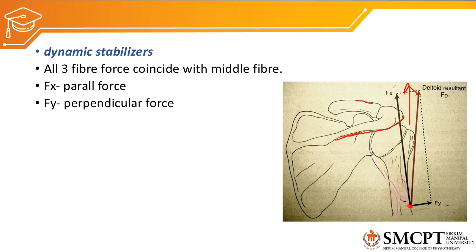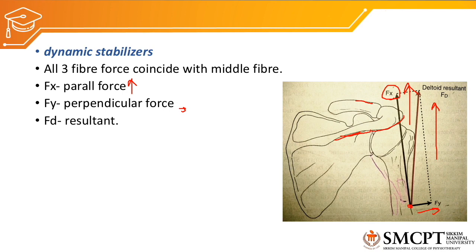Whereas there is a small rotatory force created by the deltoid, which is Fy. So when the deltoid contracts, it creates more of a translatory or parallel force directed upward. As you can see, Fx is translating the humerus upward. So there cannot be pure abduction without help of other muscles — the rotator cuff muscles. These two forces create a resultant force tagged as Fd, which is more towards the translatory force pulling the humerus upward, because Fx is greater than Fy.